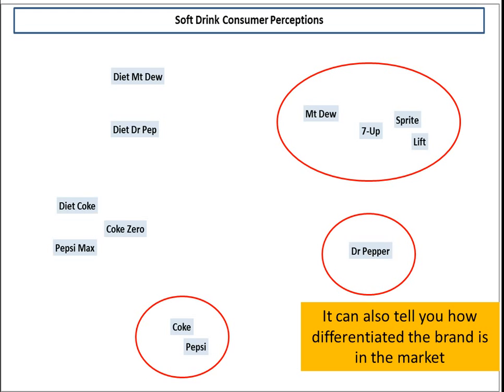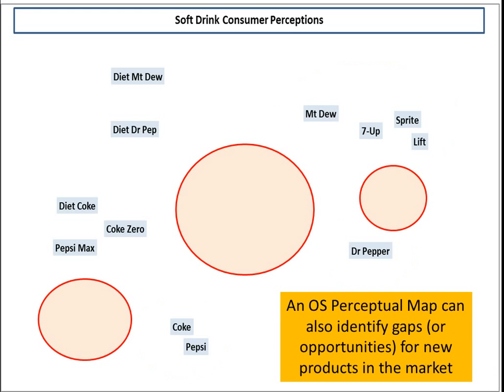This array of brands also tells us how differentiated our brand — or any brand — is in the marketplace. Using the hypothetical data provided, you can see that Dr Pepper has no one near it, so it has a clear point of difference and is quite distinct in the marketplace. Coke and Pepsi are close together at the bottom, meaning they are significant substitutes and many people see them as very similar products. Up the top, the Mountain Dew and 7Up set shows a very cluttered marketplace where multiple brands are all very similar.